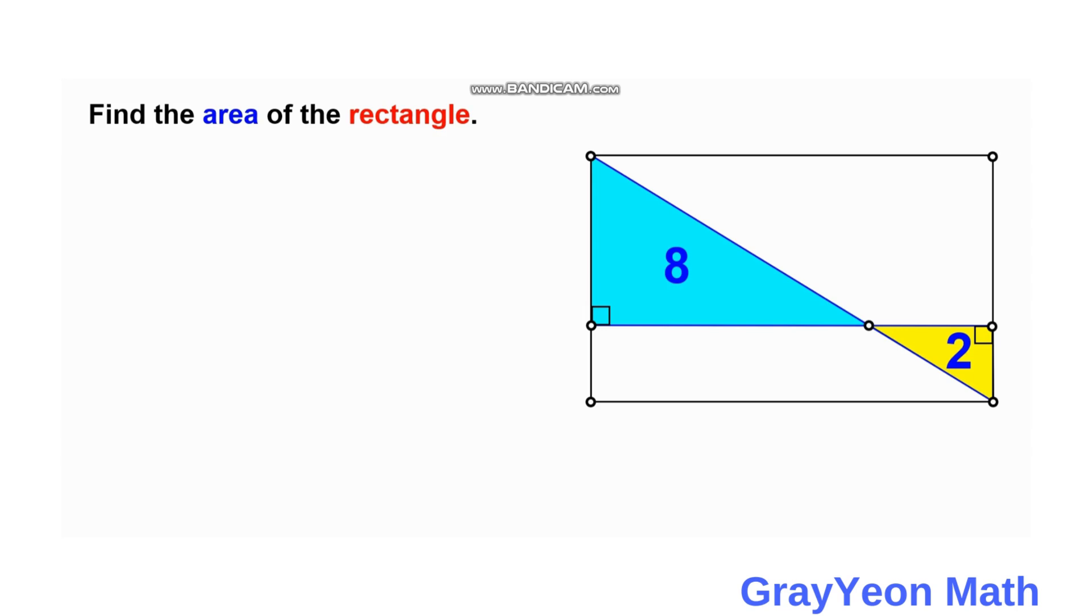So first thing that we can do is we can actually draw a line from this point upwards. And that should be perpendicular to the upper length and the lower length.